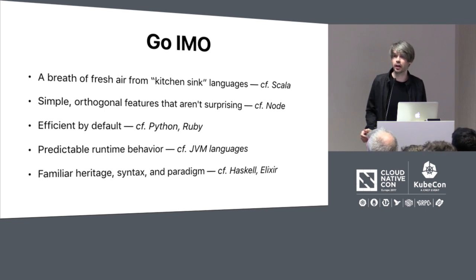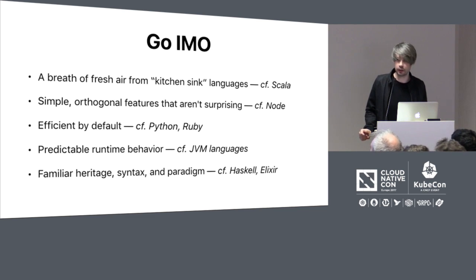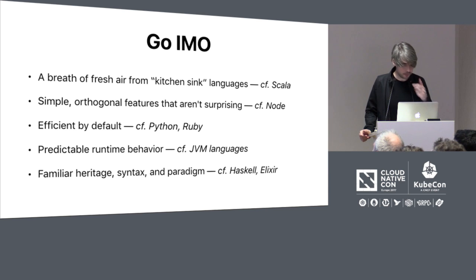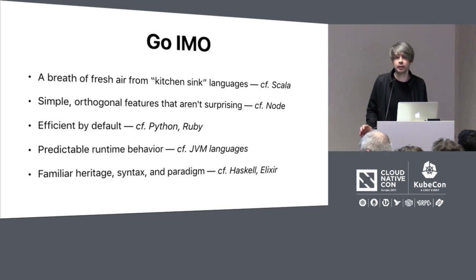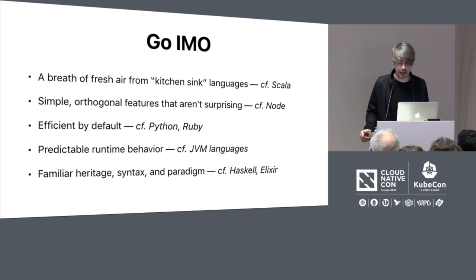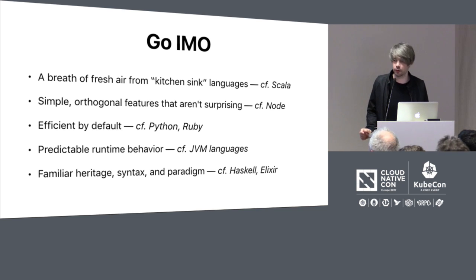Go has predictable runtime behavior — when you deploy a Go application, there are not a lot of knobs to turn that can dramatically change how it performs. To me, this stands in stark contrast to all the JVM languages, which require quite specialized knowledge to operate at scale. And finally, Go has a familiar heritage, syntax, and an imperative programming paradigm familiar to most of us. You can program it in a slightly functional way or in a kind of object-oriented way, but in general it's like pretty straight-line code. That makes it easy to learn, easy to spin up new developers on, and stands in contrast to languages like Haskell and maybe Elixir.